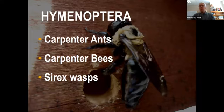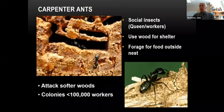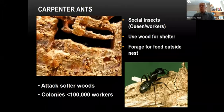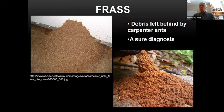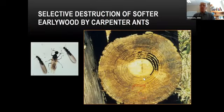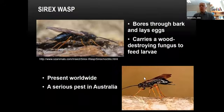Drywood termites, carpenter ants, bees, and cyrex wasps — all three of these don't eat the wood; they just use the wood to live in. The word to remember is frass: you diagnose carpenter ants with frass, because you see them dropping sawdust out of the wood. Carpenter bees drill tunnels and deposit eggs in the tunnels. The cyrex wasp does something similar.